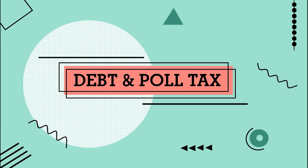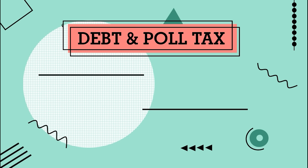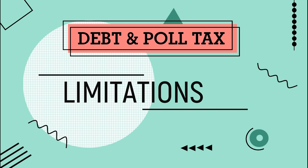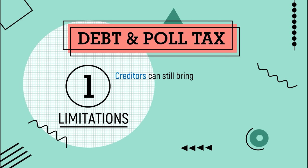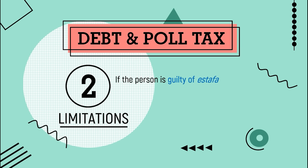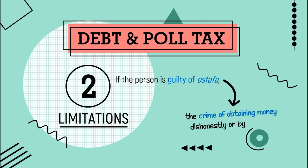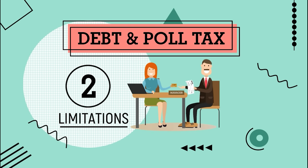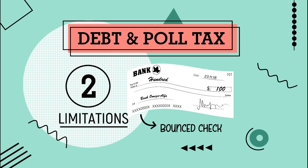Moving on to debt and poll tax. Article 3, Section 20 states that no person will be sent to jail because of failure to pay a debt or poll tax. However, there are limitations: creditors can still bring you to court to demand and enforce payment of your debts. Also, if a person is guilty of estafa — the crime of obtaining money dishonestly or by trickery — he will be sent to jail. For example, if David paid his debt with a check that didn't have enough funds — called a bounced check — the bank can sue him for estafa.